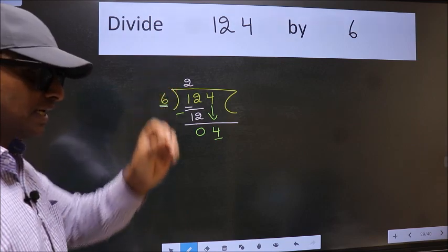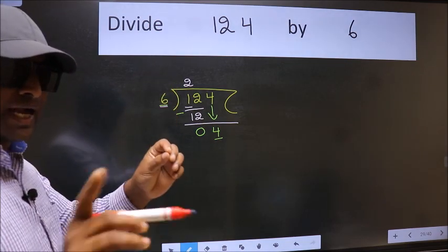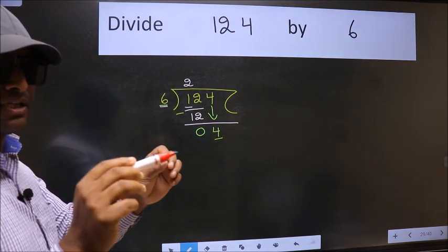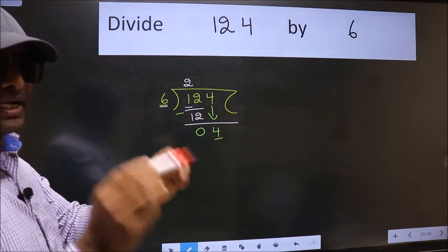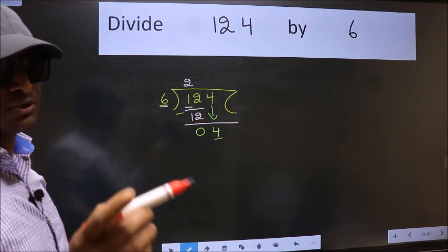I repeat. Bring down the number and also put dot, take 0. Bring down the number and put dot, take 0. Both at the same step, you should not do.